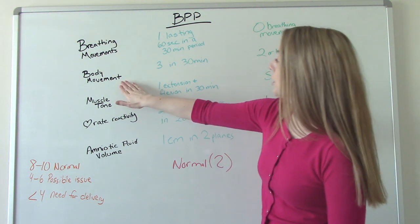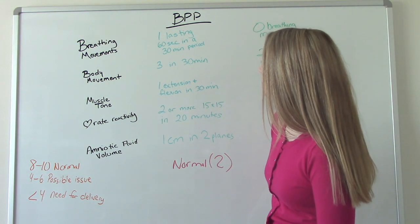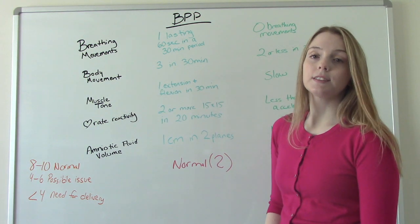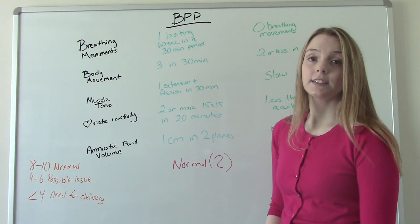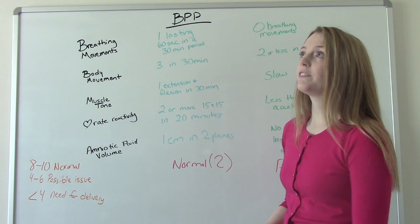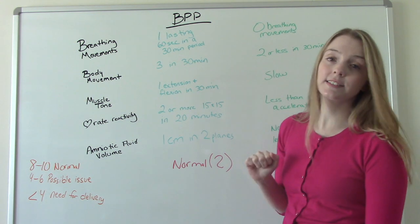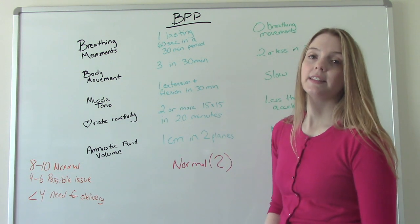Our second category is body movement. So they need to have three body movements in 30 minutes to get a two. And if they don't, if they have two or less in that 30 minute time, they get a zero.